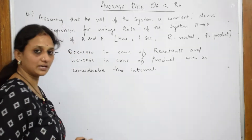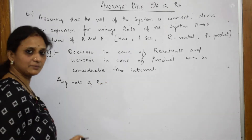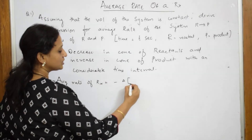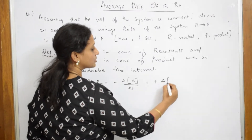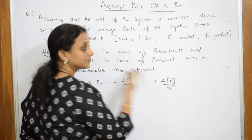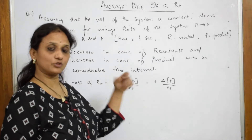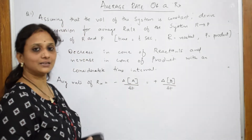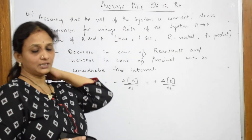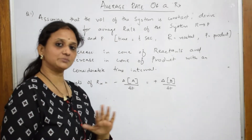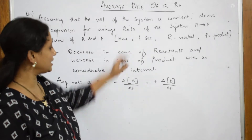Average rate of a reaction — how is it represented? It is the same as rate of a reaction: negative change in concentration of the reactant divided by time, which is equal to plus change in concentration of the product divided by time. Now I have to show what delta R and delta P actually are. Assuming that the volume of the system is constant, I have to derive an expression for average rate of a reaction.